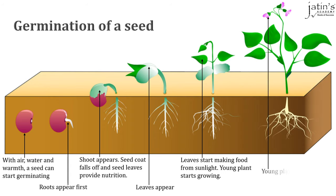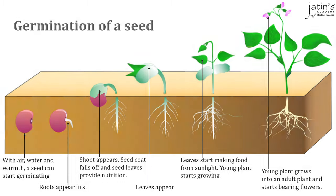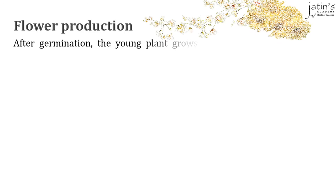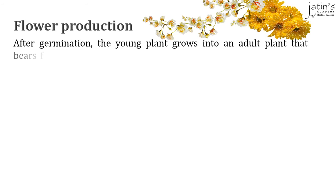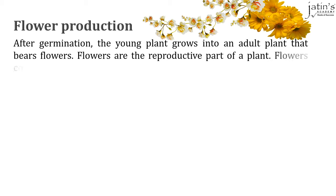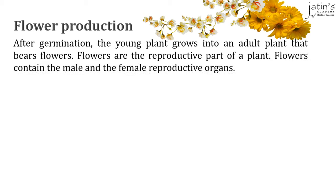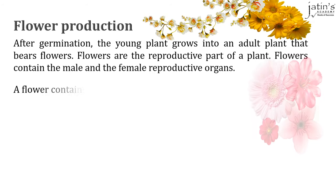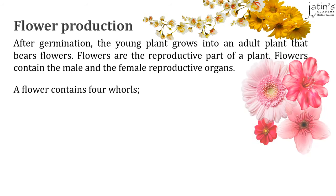The young plant will grow on to become an adult plant which will then bear flowers. Flowers are the reproductive part of a plant. Flowers contain the male and the female reproductive organs of a plant.